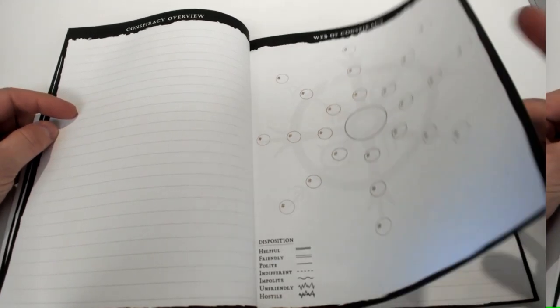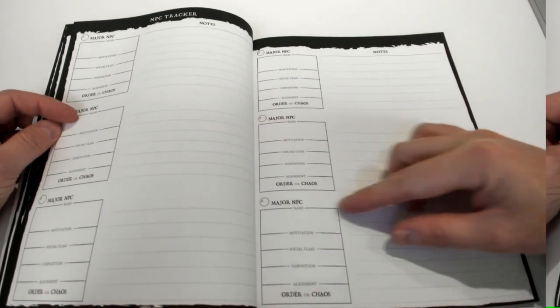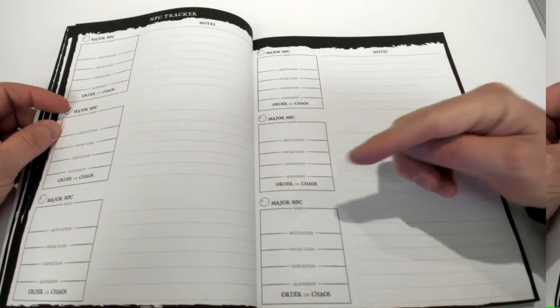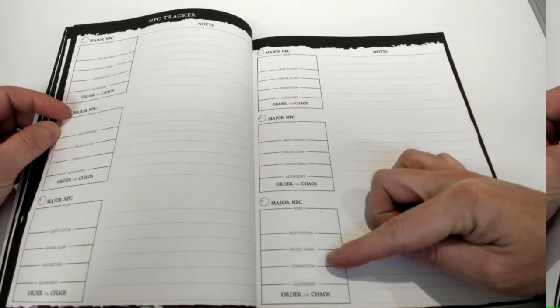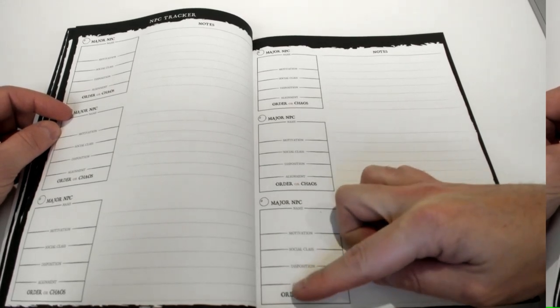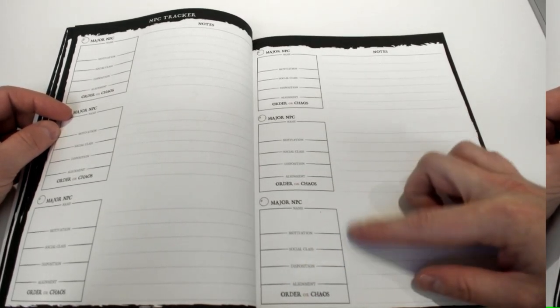Obviously these circles are meaningless unless you know exactly who they are. So you can start to see major NPCs - maybe NPC is number five - you put through the name, their motivation, their social class, their disposition, circle their alignment whether they're order, line or chaos line, and write some details about them right here in the notes.